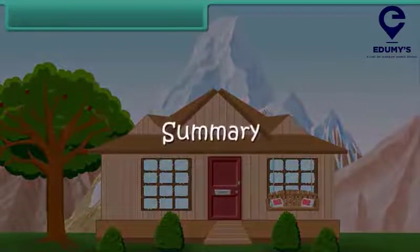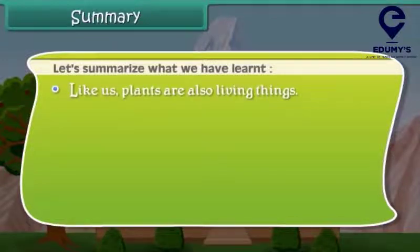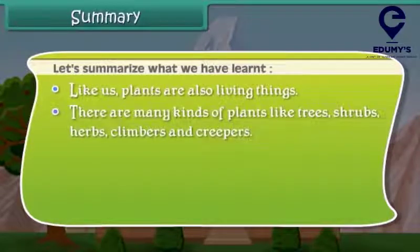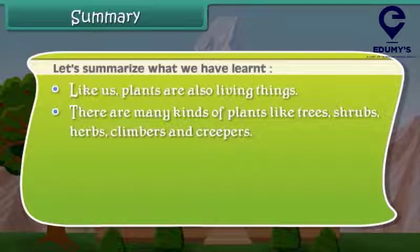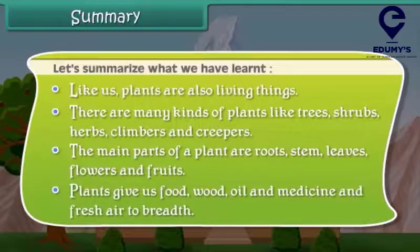Summary. Let us summarize what we have learned so far. Like us, plants are also living things. There are many kinds of plants: trees, shrubs, herbs, climbers, and creepers. The main parts of a plant are roots, stem, leaves, flowers, and fruits. Plants give us food, wood, oil, medicine, and fresh air to breathe.